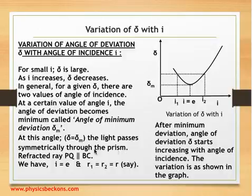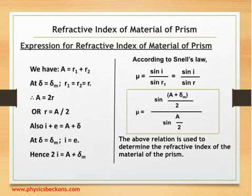For the expression for refractive index of the material of the prism, we use the relations we've studied. We have angle A equals r₁ plus r₂. At δ equal to δₘ (minimum deviation condition), we have r₁ equal to r₂ equal to r, leading to A equals 2r. Therefore, r equals A/2.